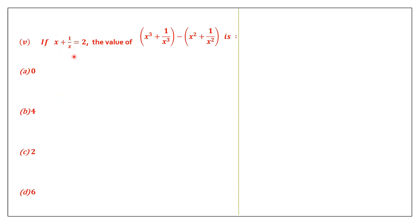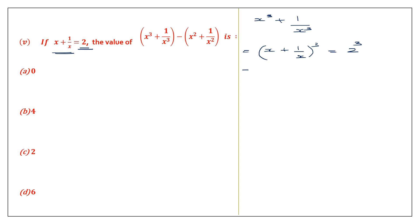Question 5: if x plus 1 by x equals 2, find the value of x cubed plus 1 by x cubed. I can write x cubed plus 1 by x cubed as x plus 1 by x the whole cubed. Since x plus 1 by x equals 2, this becomes 2 cubed. Expanding using the formula: a cubed plus b cubed plus 3ab times (a plus b), where a is x and b is 1 by x.